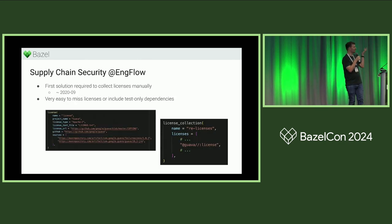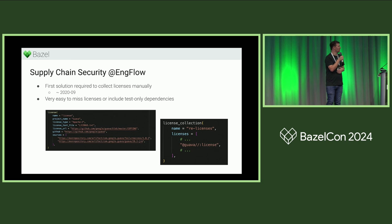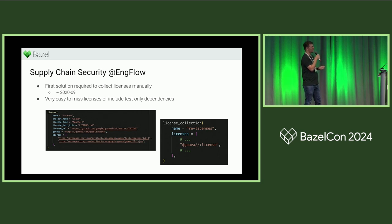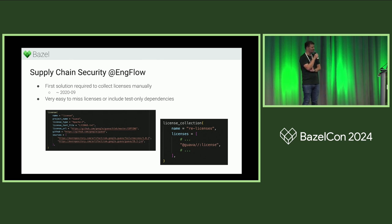There was no standard solution, so we built our own, roughly four years ago. We introduced a new rule called 'license' that declared the type of license, the name of the package, where we got it from, and the license file. We put that next to every imported jar file. Then at a higher level where we built our binary, we had a 'license collection' — but you had to manually specify every license you transitively depended on. As you can imagine, it was very easy to get wrong: add a new library and forget to add it, or remove one and forget to remove it from the license target.